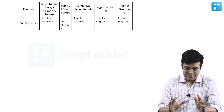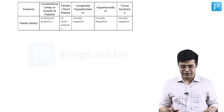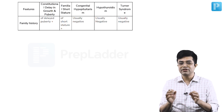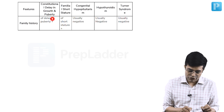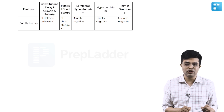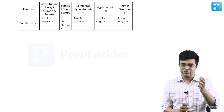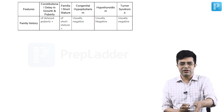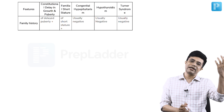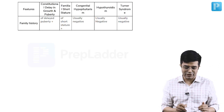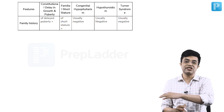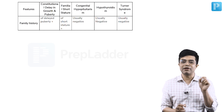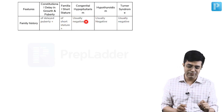First, family history. Often textbooks say there is no family history in familial short-stature, but you need to understand what family history is being talked about. In constitutional delay in growth, there will be a family history of delayed puberty — the father or mother will give a history that puberty onset was around 15–16 years. In familial short-stature, short-stature is running in the family, so there is a family history of short-stature but no family history of delayed puberty. Be careful what family history is being talked about.